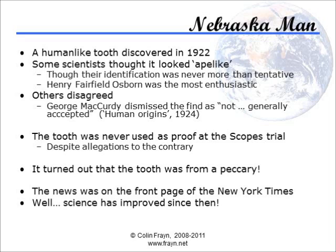Nebraska Man is such an example. A single human-like tooth was discovered in 1922, which some scientists claimed showed ape-like characteristics. Some were, of course, more excited by the find than others, with the majority not accepting the tooth as being from a hominid. Despite allegations that the tooth was used as evidence at the Scopes trial, this was not in fact the case. This trial, legendary in creationism circles, and famously depicted in the rather enjoyable film Inherit the Wind, formed the first high-profile trial of creationism against evolution. As it turns out, the tooth was not from a hominid at all, but was from a peccary, a small pig-like animal. The insinuation from Hovind is that this somehow shows that all evidence for the ancestry of our species is flawed, though I find that view puzzling. One single tooth, thought by many not to be authentic even at the time, which was never properly tested, and was not subjected to any of the vast array of tests that have been developed in the ninety years since, does not in any way give me cause for concern.